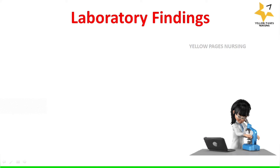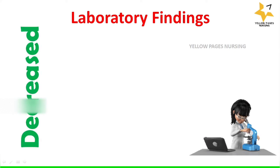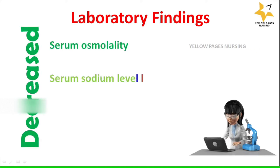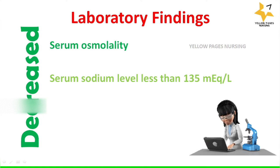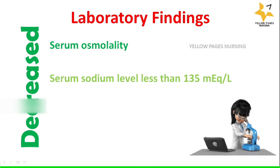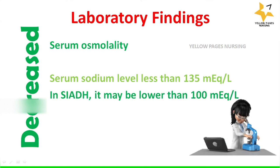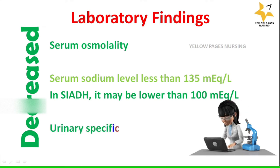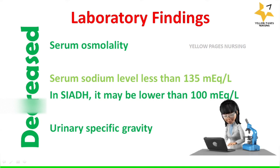When looking into the laboratory findings, hyponatremia shows decreased levels of serum osmolality and a sodium level less than 135 milliequivalents per liter. In SIADH, it may be lower than even 100 milliequivalents per liter. There is also decreased urine specific gravity.